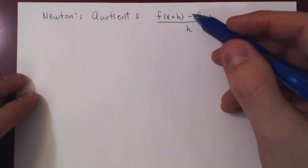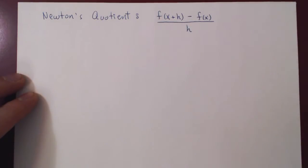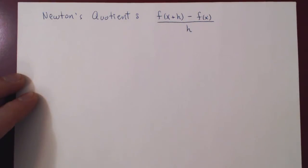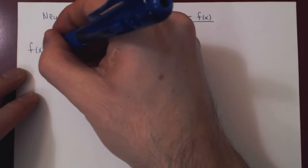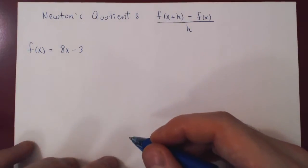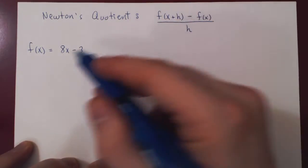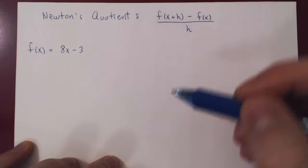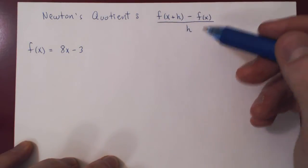Let's look at a few examples of how to compute and simplify Newton's quotient, and then we'll see what happens to our simplified answer as h is allowed to shrink to zero. Let's start with a linear function: f of x equals 8x minus 3. We already have f of x, so we compute f of x plus h, then plug it in and simplify.